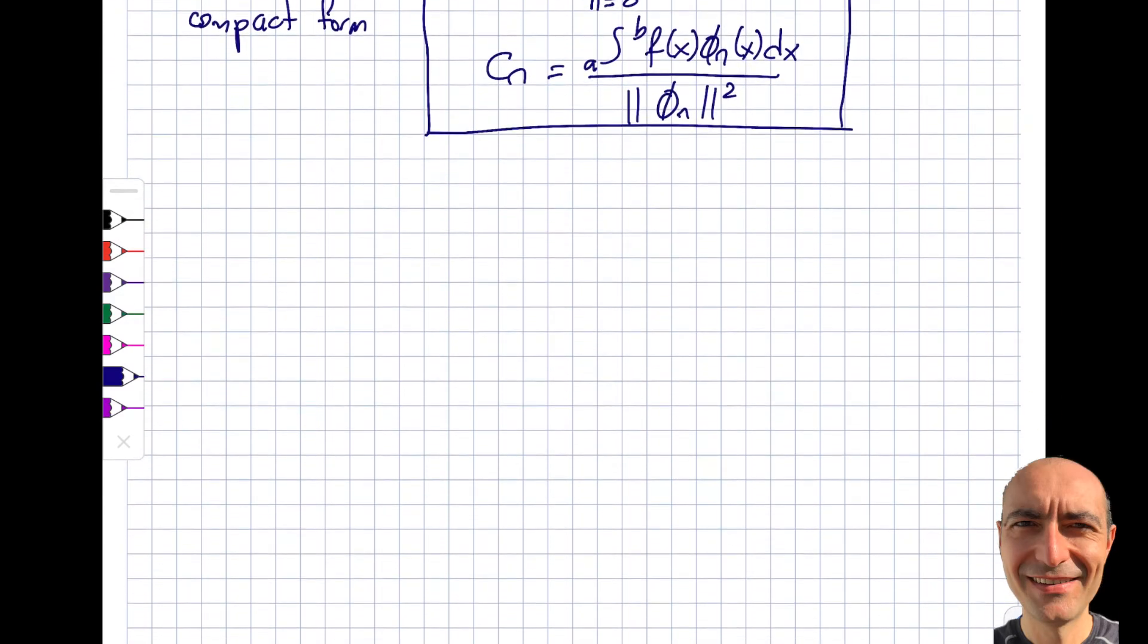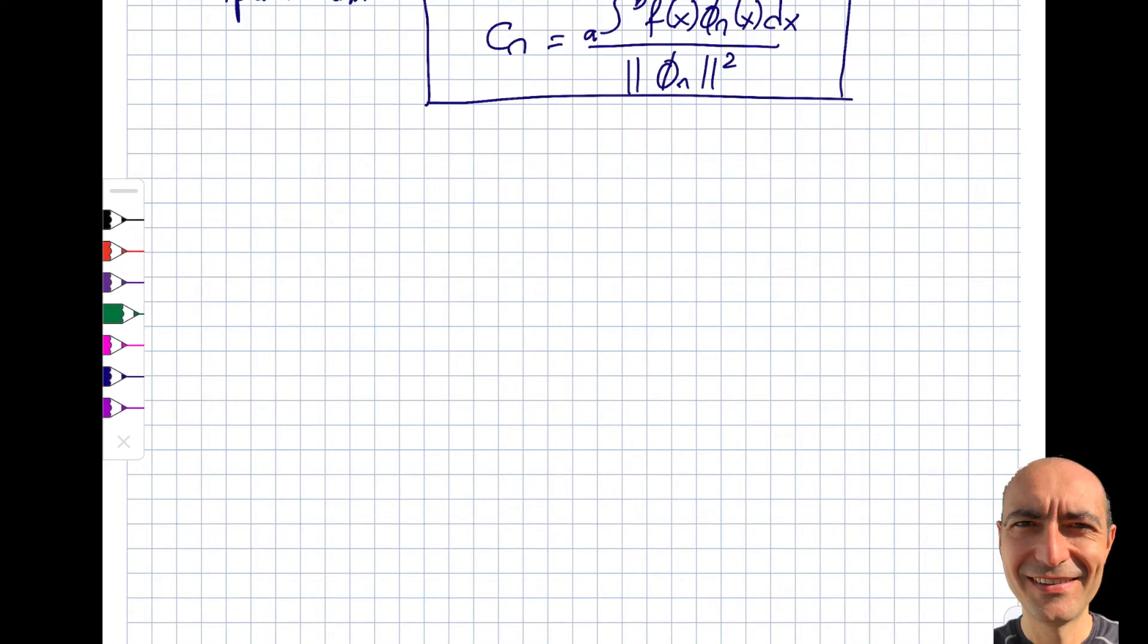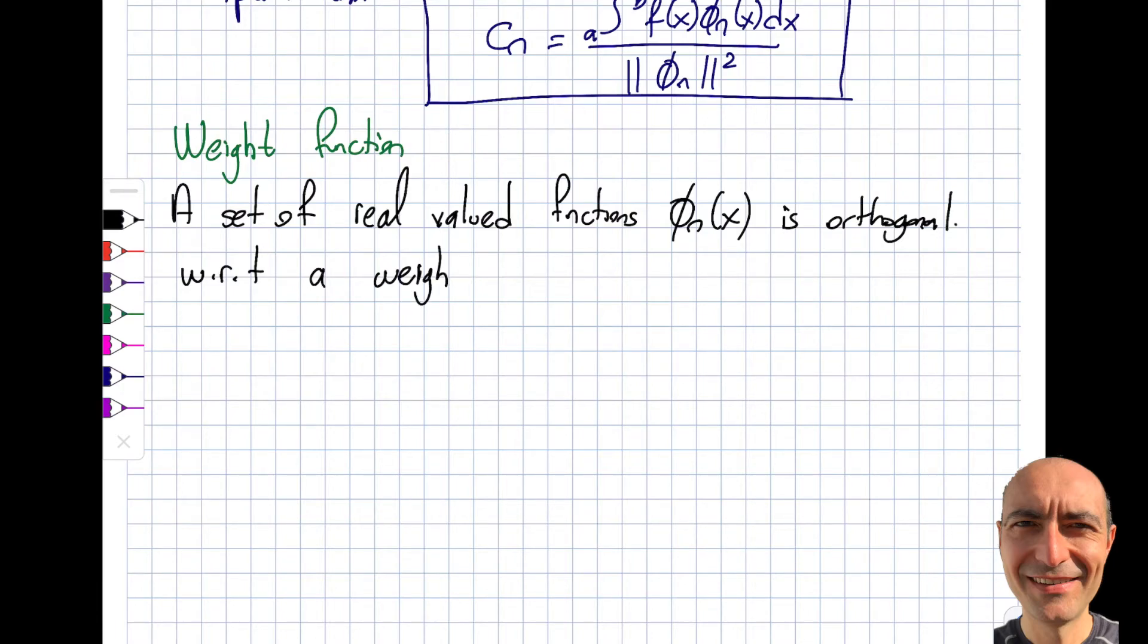So this is a very important two equations. We are going to use this right and left when we start the Fourier series. You will see. But before we start the Fourier series, I want to close off the segment with introducing something called a weight function. So basically, I am expanding what I covered so far in this particular segment by adding another function to it. A set of real-valued, not imaginary, functions. And these functions are very similar to what I've been using symbol-wise.